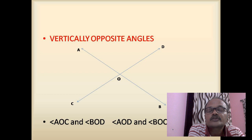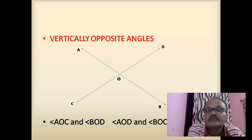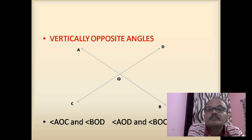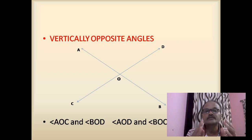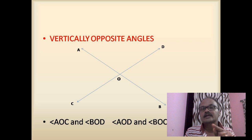Here, lines AB and CD are two lines intersecting at point O — they are passing through point O. When two lines intersect, four angles are formed: angle AOC, angle AOD, angle BOD, and angle BOC. Of these four angles, angle AOC and angle BOD are called a pair of vertically opposite angles — one coming opposite to the other. Similarly, angle AOD and angle BOC are also called vertically opposite angles.